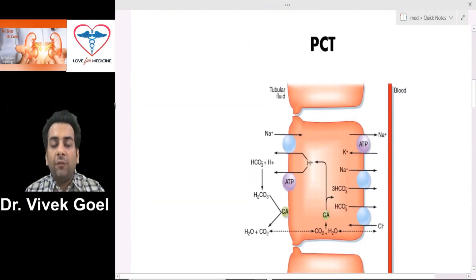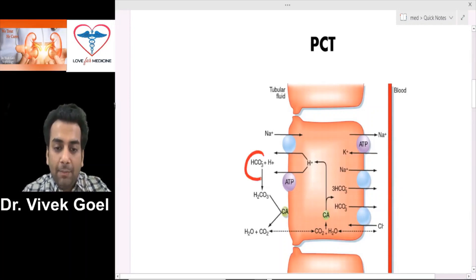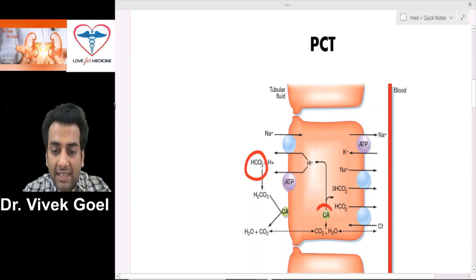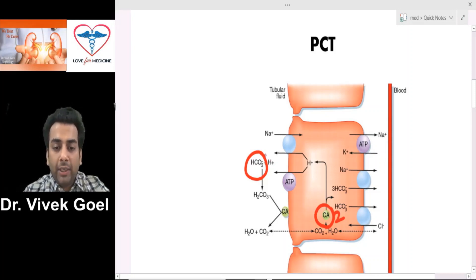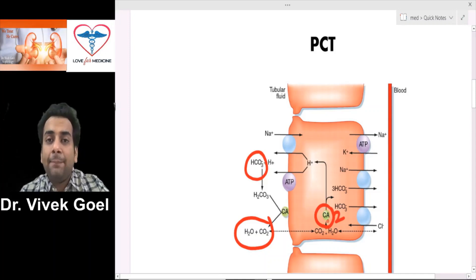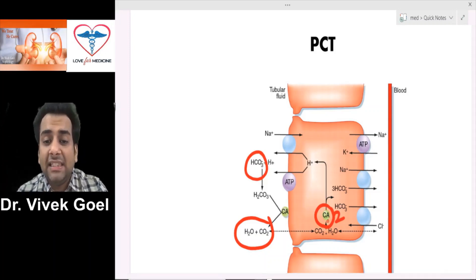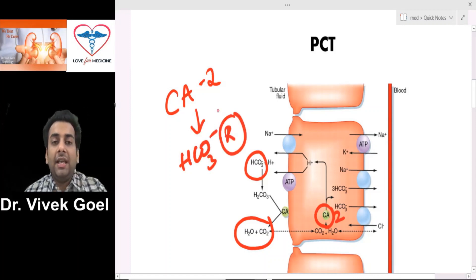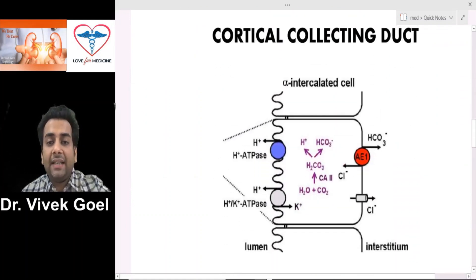Coming to the proximal convoluted tubule (PCT), there is absorption of bicarbonate, and that is mediated by a very important enzyme — carbonic anhydrase type 2. The carbonic anhydrase 2 enzyme converts bicarbonate into H2CO3 and cleaves it again to form CO2 and H2O, thus mediating the entry and helping in the absorption of bicarbonate through the PCT. So it is carbonic anhydrase 2 that is responsible for bicarbonate reabsorption in the PCT.